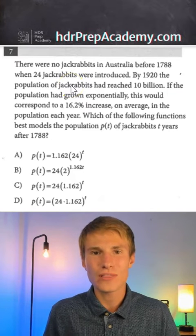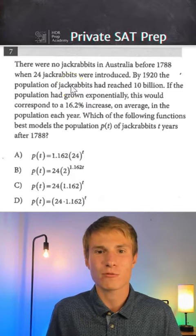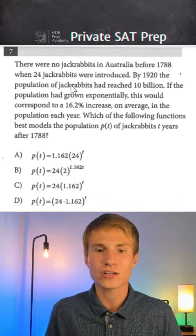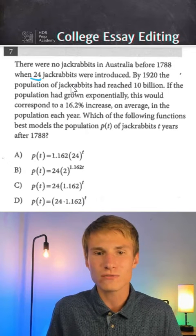Here's an SAT math rule that you need to know that I'm going to illustrate through solving this question. The question says there were no jackrabbits in Australia before 1788 when 24 jackrabbits were introduced.